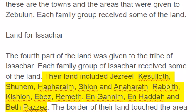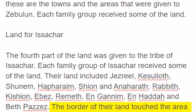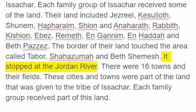Also Rabbath, Kishan, Abes, Rameth, Nganim, Nhatah, and Beth-Pazay. The border of their land touched the area called Tabor, Shahezuma, and Beth-Shemesh. It stopped at the Jordan River.